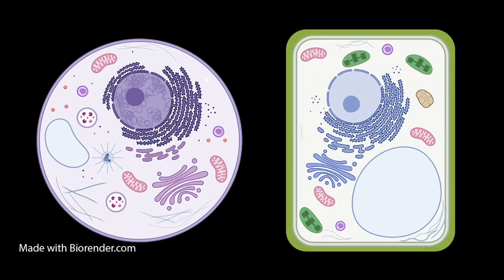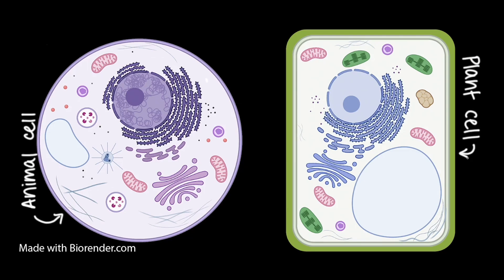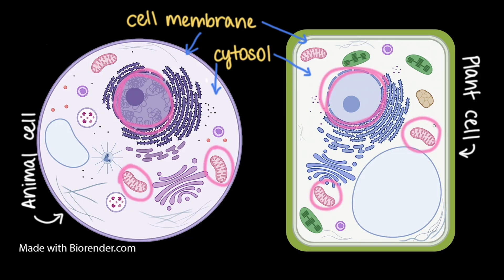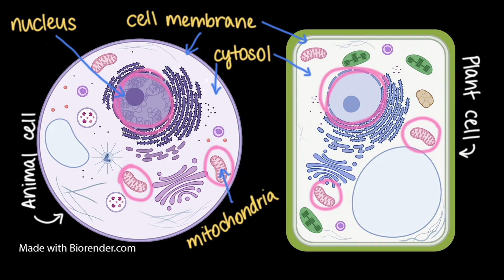First, let's take a look at some cell models. Here on the left is an animal cell and on the right is a plant cell. Let's try and identify the things that both animal and plant cells share in common. Both animal and plant cells have a cell membrane, which acts like a gate to control what enters and leaves the cell. They also have a jelly-like substance called the cytosol, which contains organelles — small compartments with specific functions inside the cell. Animal and plant cells share several common organelles, two of which include the nucleus and the mitochondria. The nucleus serves as an information database to store the cell's genes, while the mitochondria act as factories to break down sugars and release energy that the cells can use.